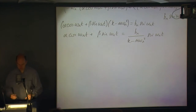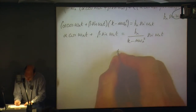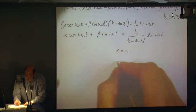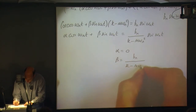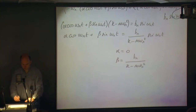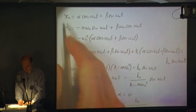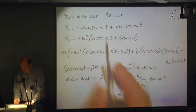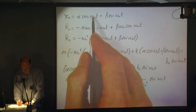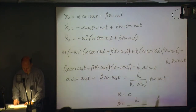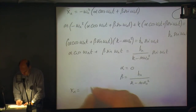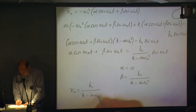It's quite clear, based upon this, there's no cosine term on the right-hand side, so α must equal zero. And β must equal b_n/(k − m ω_n²). So x_n equals zero times cos(ω_n t) plus our value for β times sin(ω_n t), giving: x_n = b_n/(k − m ω_n²) · sin(ω_n t).